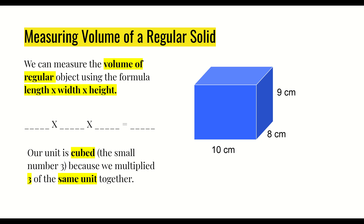We can measure the volume of a regular object using the formula length × width × height. For the example shown, we multiply 10 × 8 × 9 centimeters, which gives us 720 centimeters cubed. The unit is cubed — written as a small superscript 3 — because we multiplied three of the same unit together for a three-dimensional object. If you were finding area, you'd use two measurements and get squared; here we use three, so it's cubed.